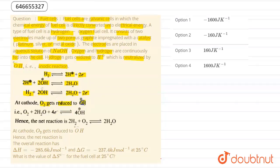At cathode, O2 gets reduced to OH-: O2 + 2H2O + 4e- → 4OH-. Hence, the net reaction is 2H2 + O2 → 2H2O. At cathode, oxygen is getting reduced to OH-.